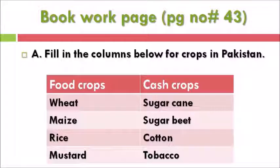Now let's open the book to page 43. Part A: Fill in the columns below for crops in Pakistan — food crops and cash crops. Food crops are those grown to meet people's nutritional needs; cash crops are those you can sell or export. Food crops include wheat, maize, rice, and mustard. Cash crops include sugarcane, wheat, cotton, tobacco, and sugar.